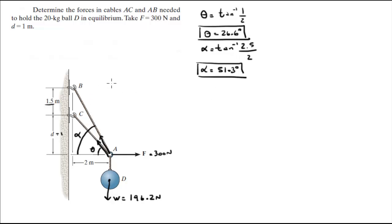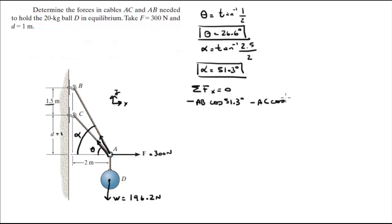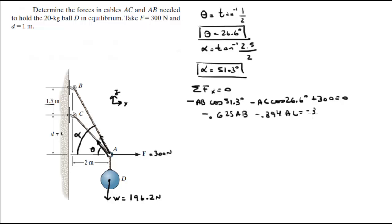We have two unknowns and we can form two equations. Sum of the forces in X equals 0. Assuming this X and Y orientation: minus AB cosine of 51.3 degrees, minus AC cosine of 26.6 degrees, plus 300 equals 0. That comes out to be minus 0.625 AB minus 0.894 AC equals minus 300.